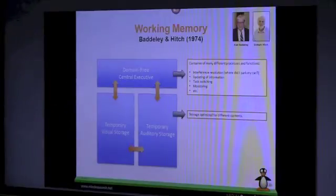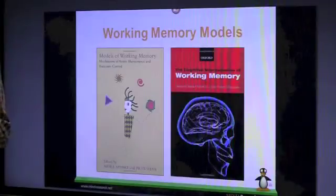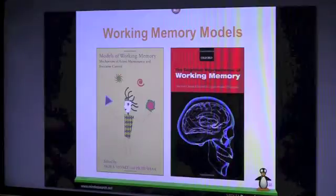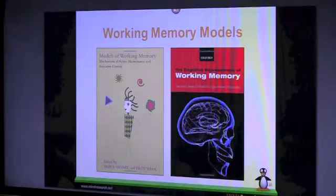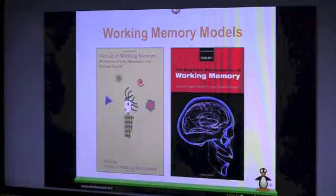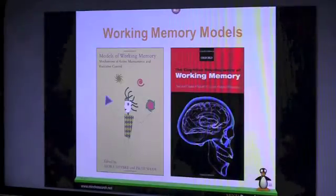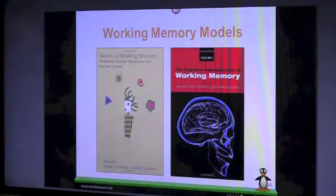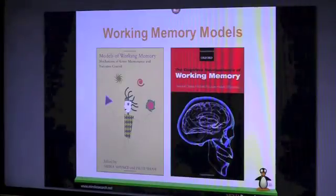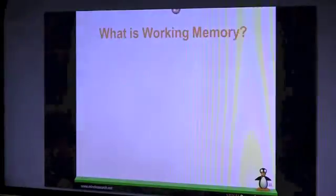There have been many books written about different working memory models. These are two covers from two books. The left one appeared in 1999 and contains 12 different working memory models. It's still the golden standard today in showing us what modeling approaches have been taken so far. I do not want to dive into these 12 different models.